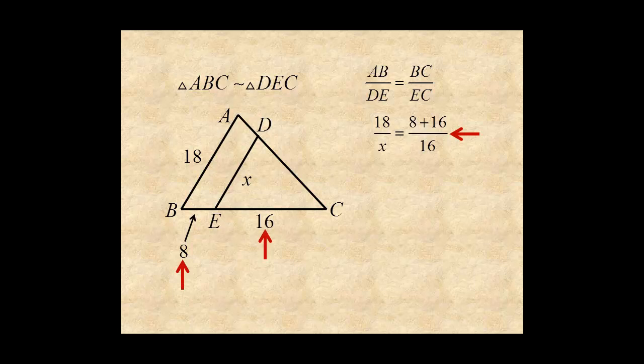So that's 18 over X equals 24 over 16. Cross-multiply and divide by 24, and the missing length is 12.